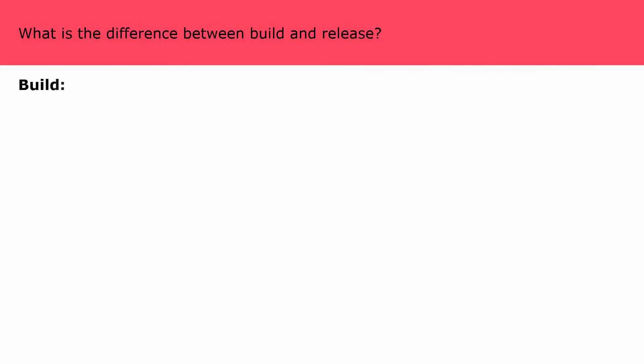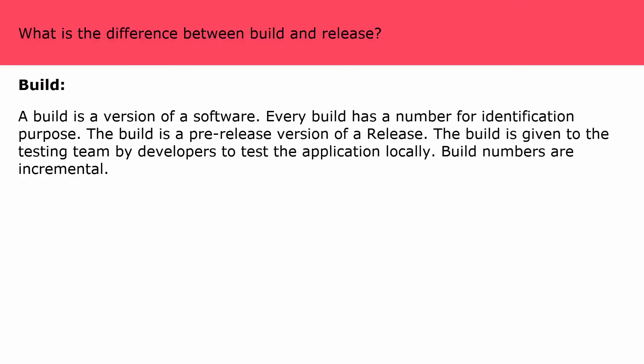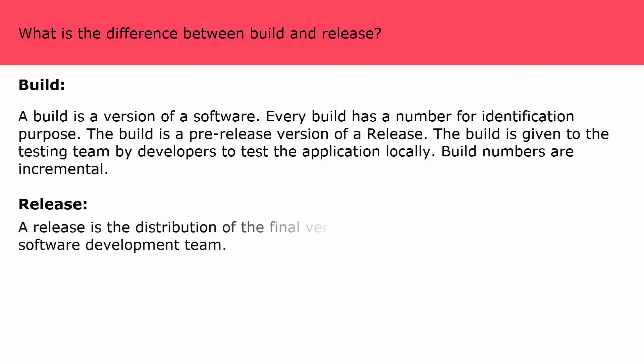What is the difference between build and release? A build is a version of a software — every build has a number for identification. The build is a pre-release version, given to the testing team by developers to test the application locally, and build numbers are incremental. A release is the distribution of the final version of an application to the customer by the software development team.